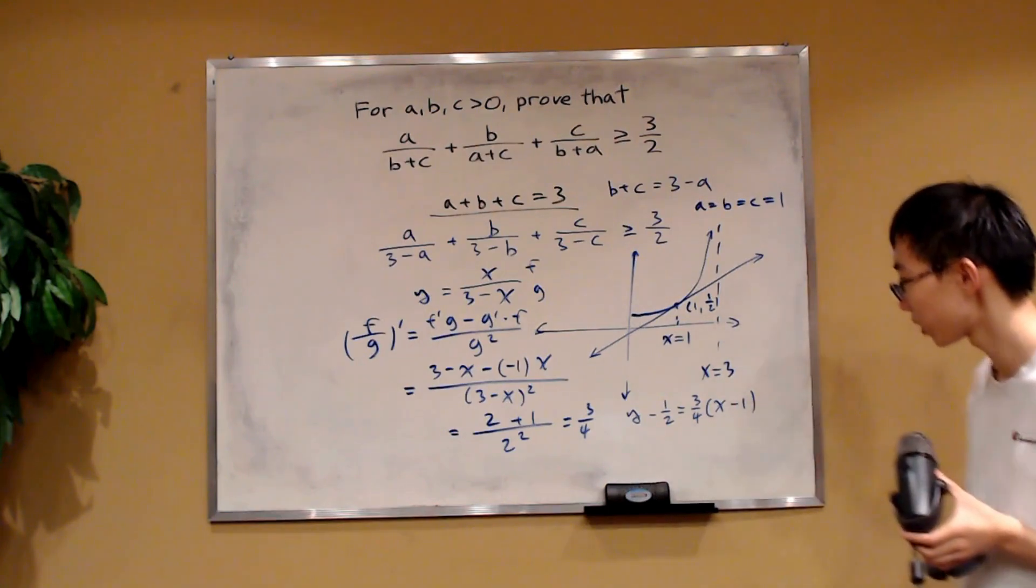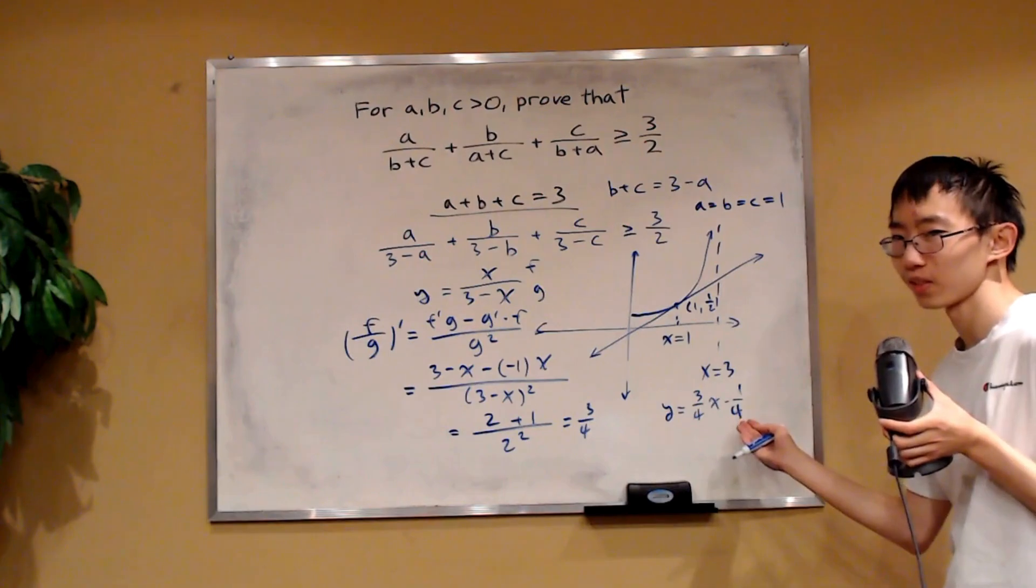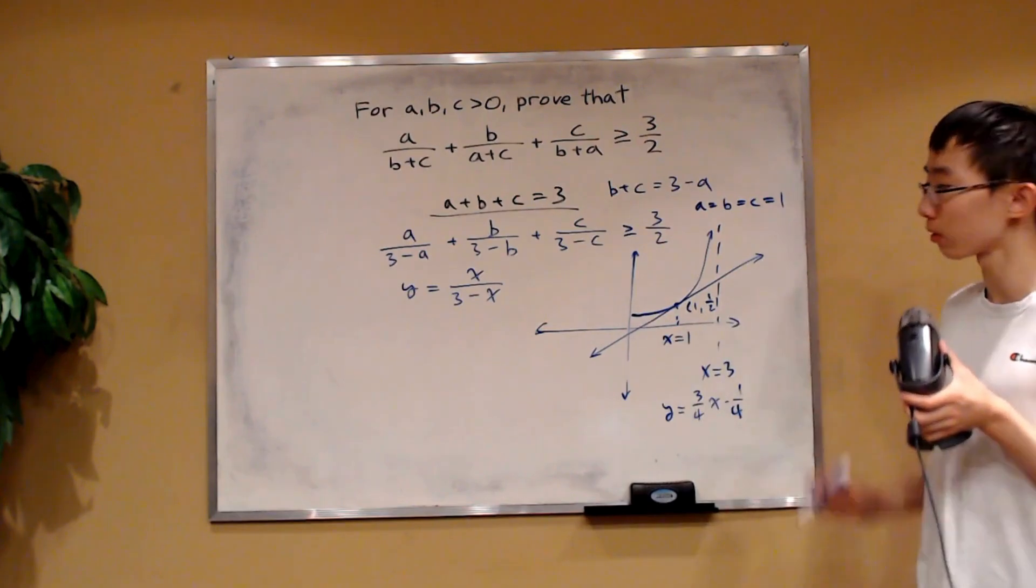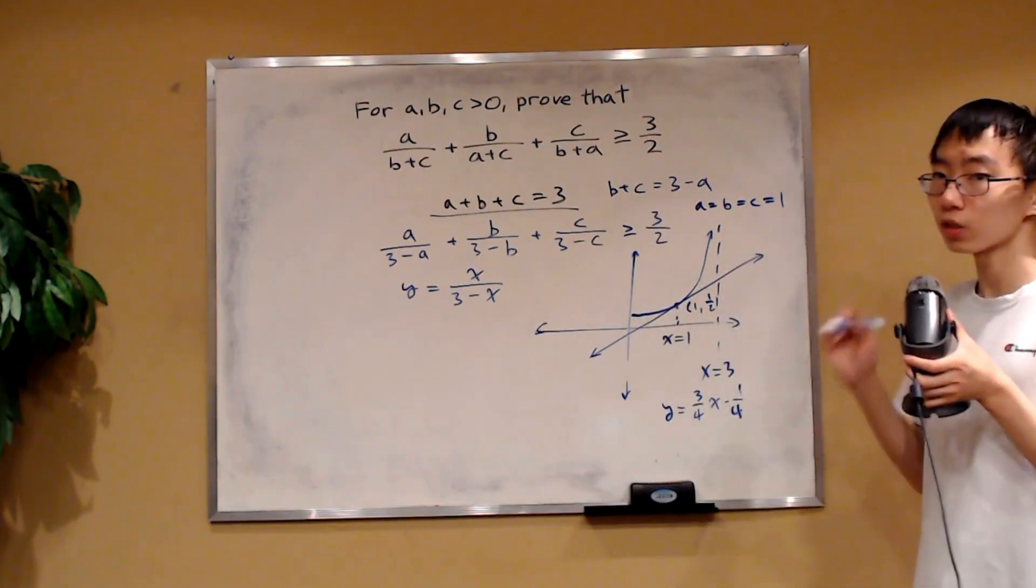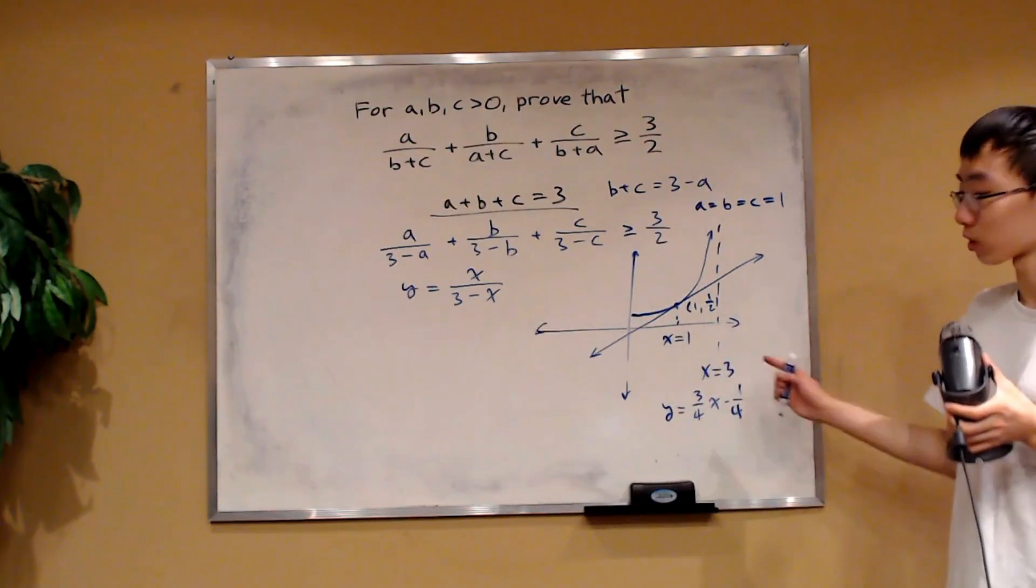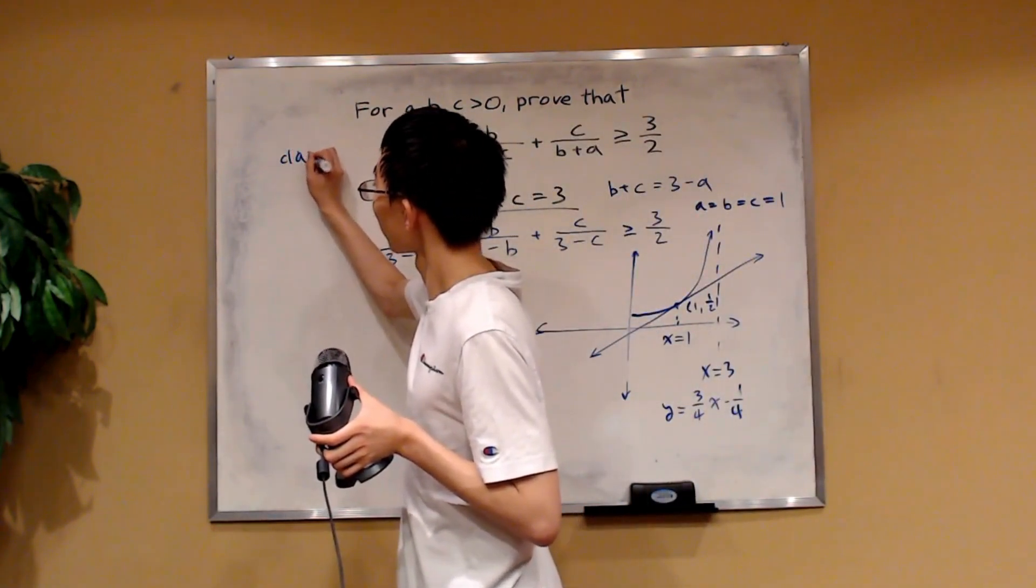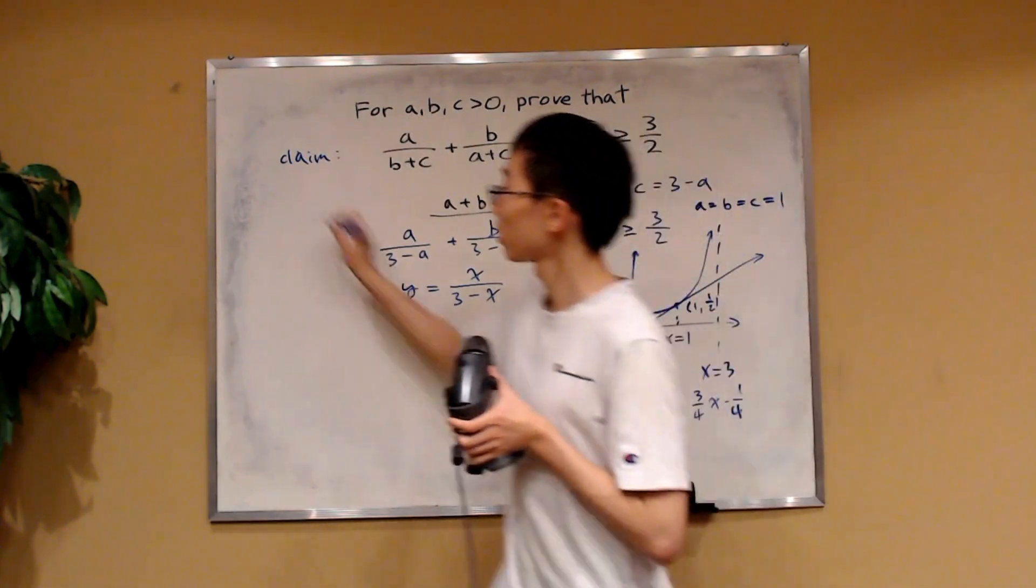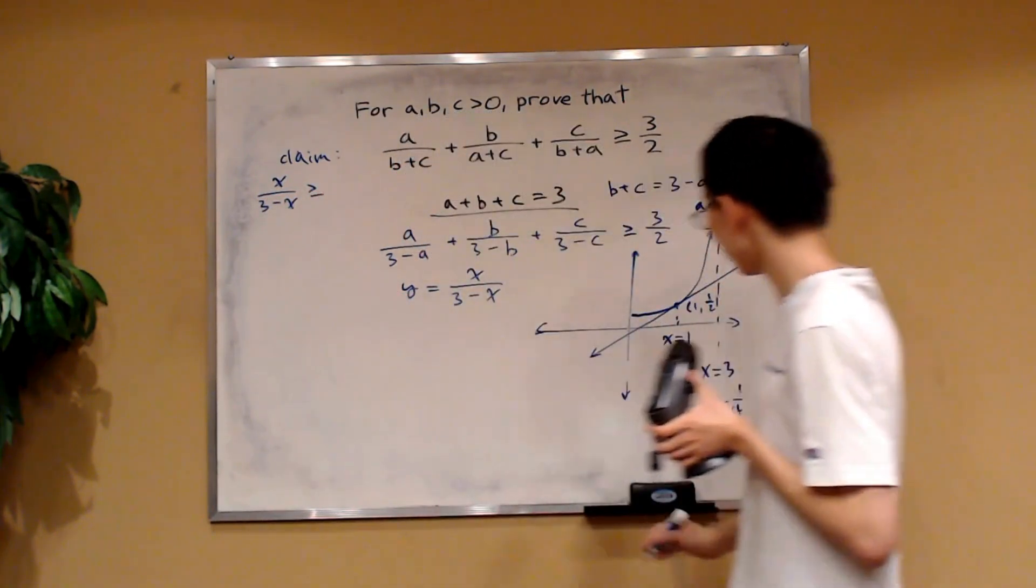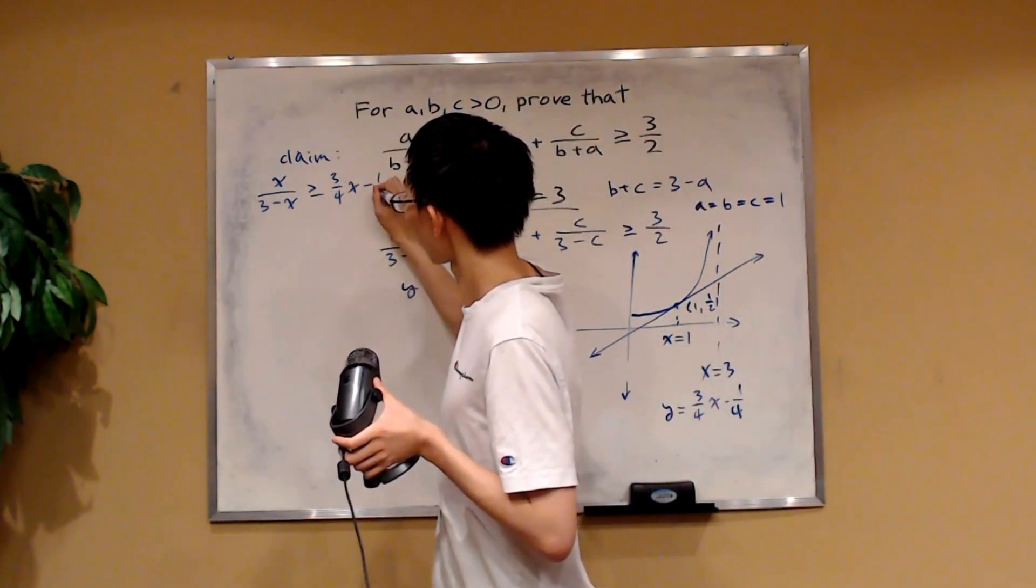Okay, so I've rearranged the equation. Now, what can we do with this? Well, remember, from this graph, it looks like that the tangent line always lies below this rational function. So we can claim that this rational function will always be greater or equal to this line. So we can claim that this function, x over 3 minus x will always be greater or equal to this line, which is 3 over 4x minus 1 over 4.